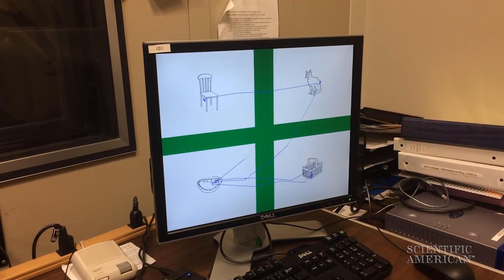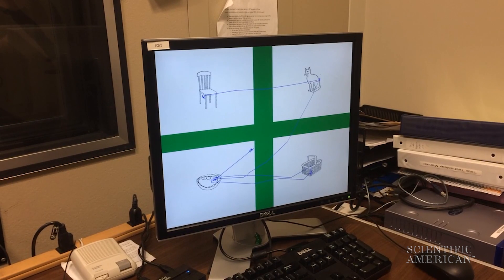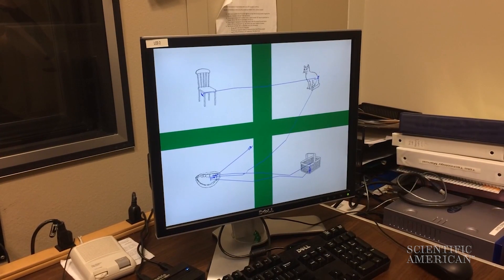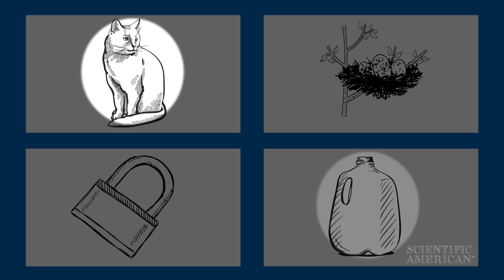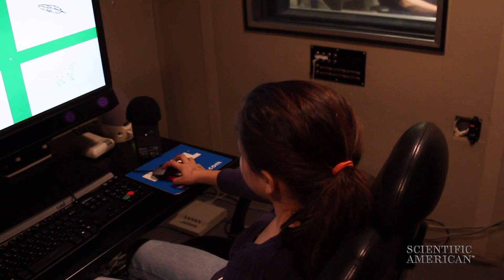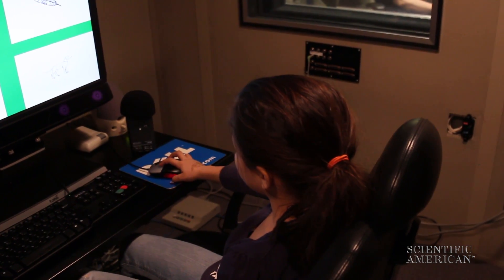Gaze data can reveal differences between typically developing children like Maria and her peers with SLI. If Maria hears the word cat and spends some of her time looking at milk, it might indicate those words are associated for her. Her eye patterns also reveal associations of associations.